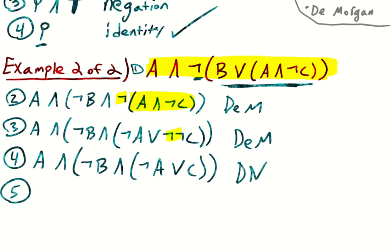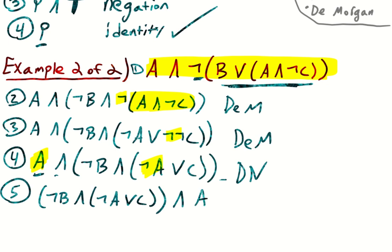So what about line five — what should we do here? Is there any commonality, some overlap? We have this a and this not a, so I think we're going to want to put those together somehow. Because we're going to be applying the commutative rule and the associative rule, let's move this a over to the right-hand side of this conjunction. So we can say: (not b and (not a or c)) and a, by the commutative rule.